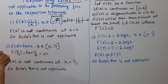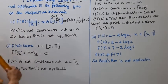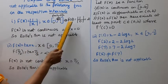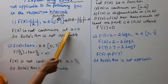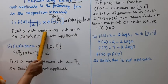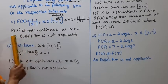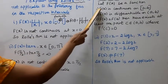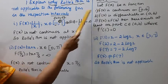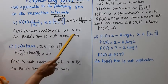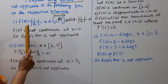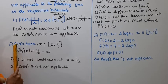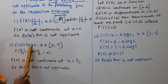F(0) = 1/0, which does not exist. So f(x) is not continuous at x = 0. Therefore, Rolle's theorem is not applicable — the first condition is not satisfied.